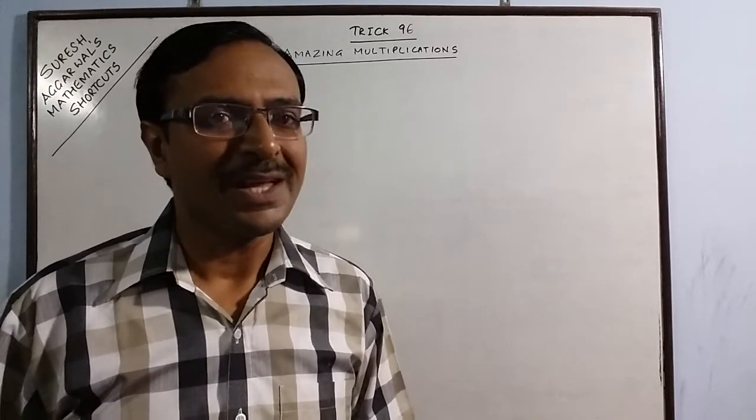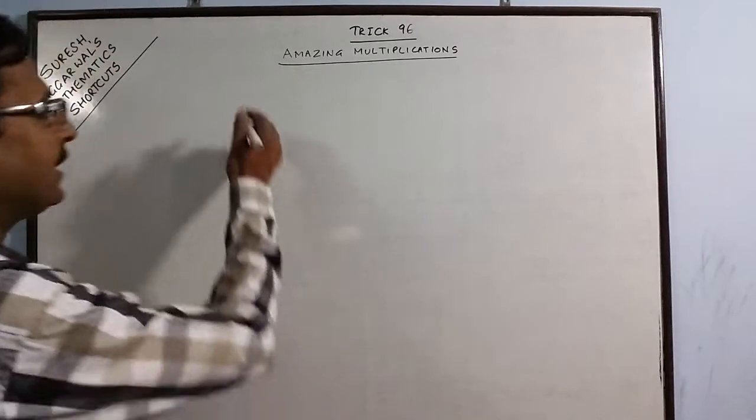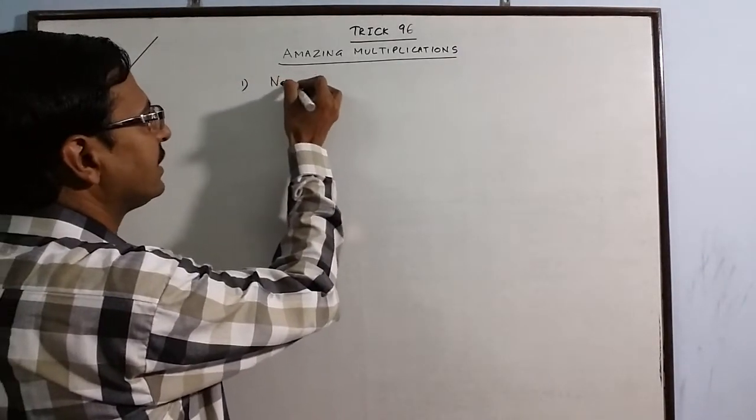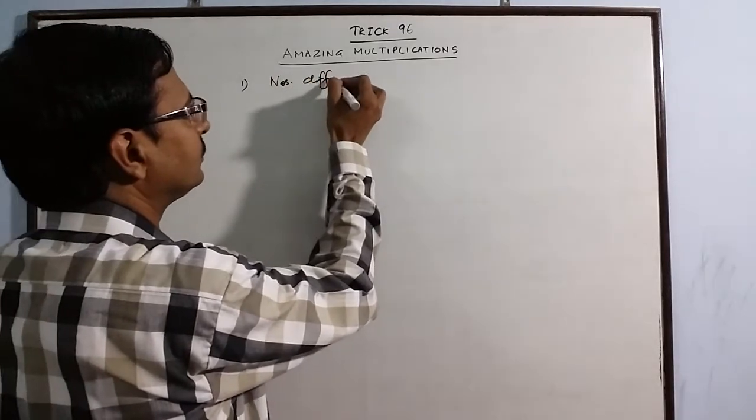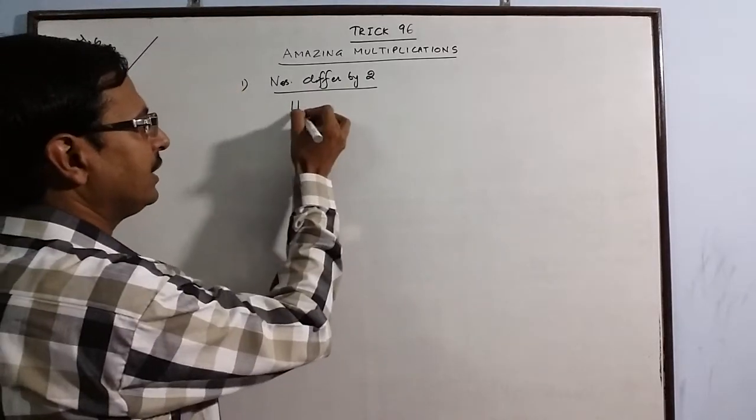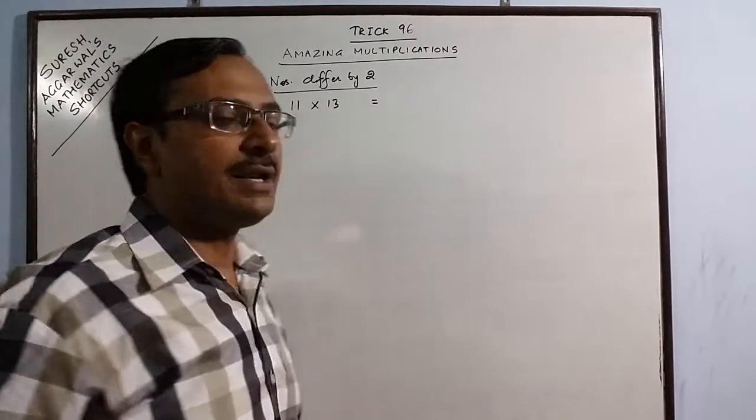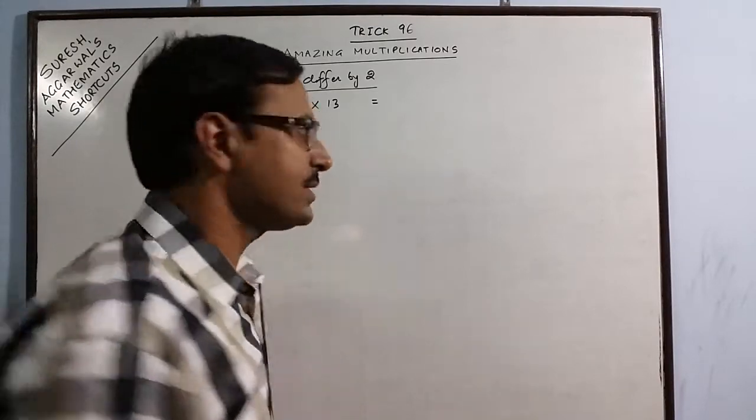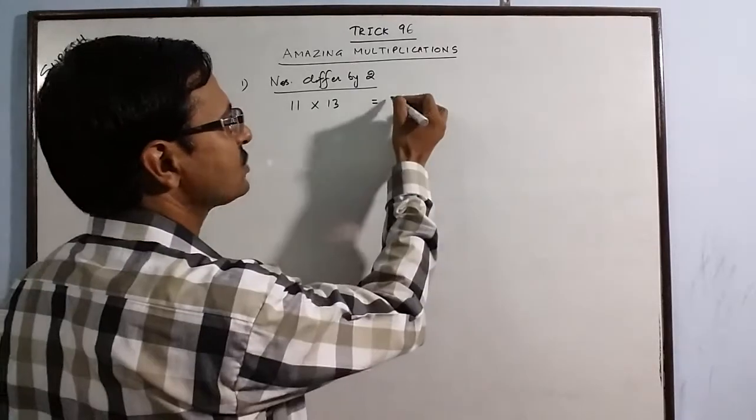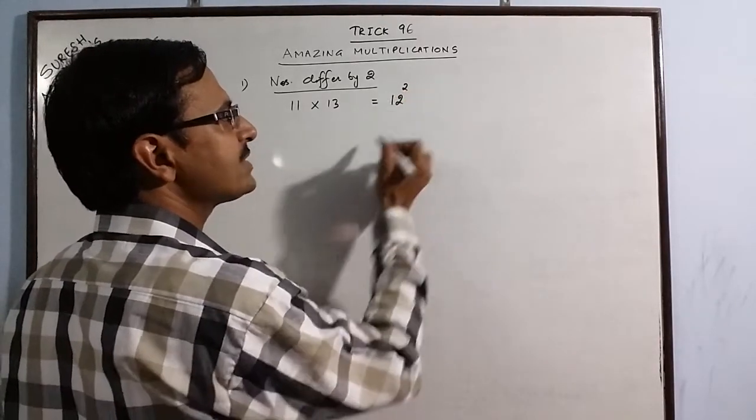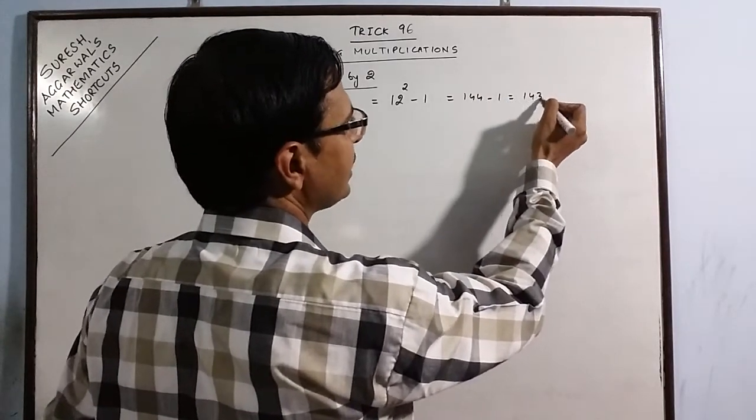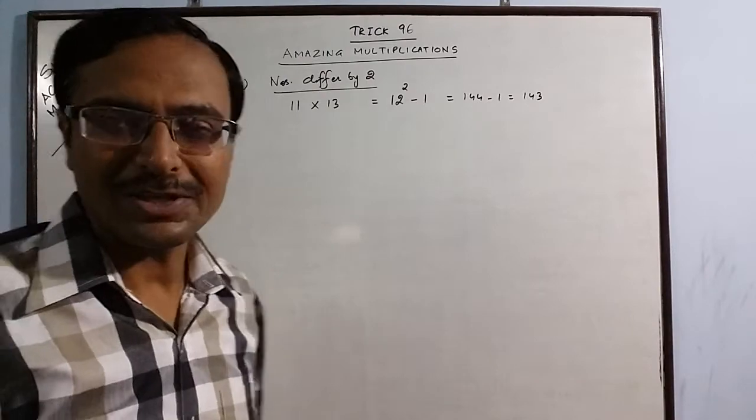Now I am taking the first type of numbers where the two numbers differ by 2. Say we have 11 into 13. Whenever the numbers differ by 2, just check what is the number which lies exactly between 11 and 13 - it is 12. Just write the square of this number and subtract 1. So 144 minus 1 is 143. No traditional multiplication, just the knowledge of basic squaring.